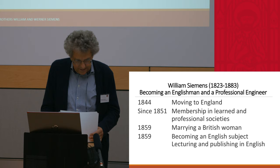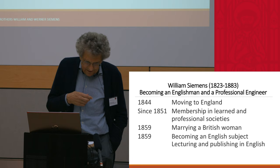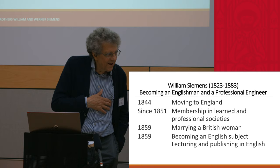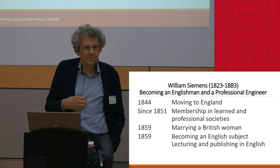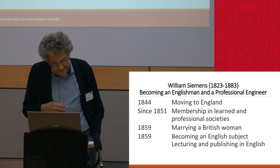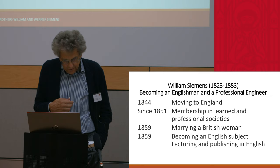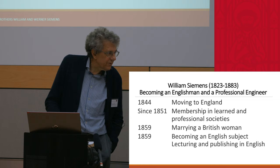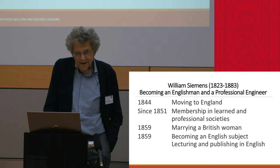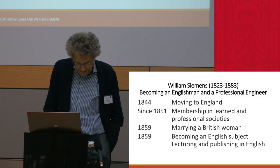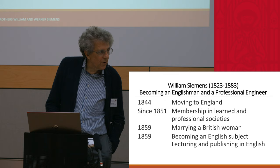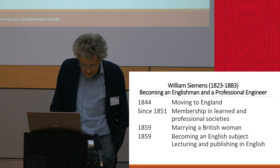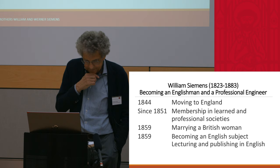In 1844, he decided to move to England and stay there. The question was how to become an Englishman and an English professional engineer. One very important point was that he became a member in many learned and professional societies in England, which was an important introduction into an engineering career. He married a British woman — more exactly a Highland lady from Scotland — and he acquired English citizenship.